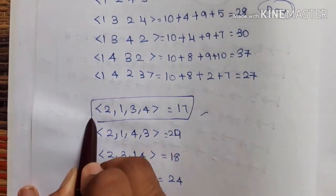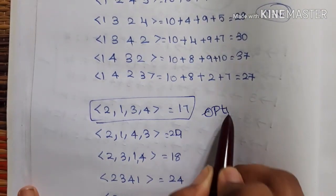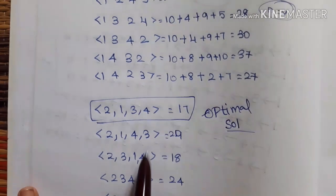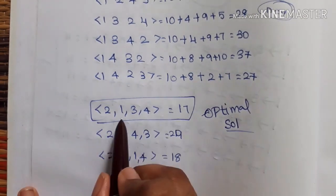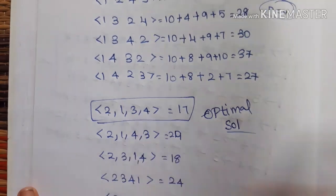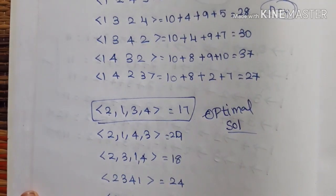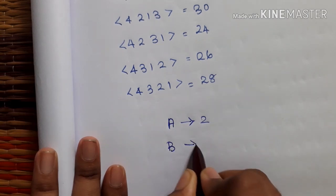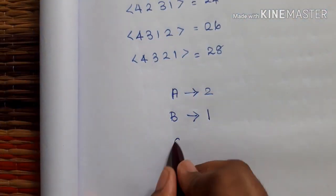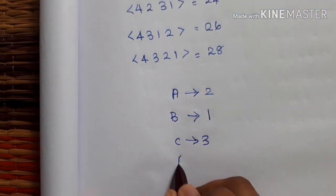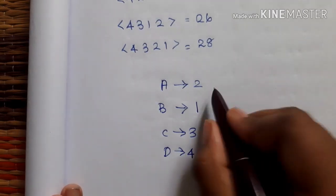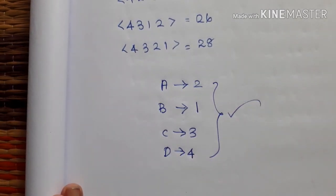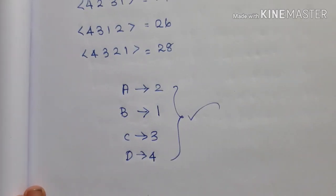What we need to do is: this is the optimal solution. Now we assign it: 2, 1, 3, 4. That means 1st person's second job, 2nd person's first job, 3rd person's third job, 4th person's fourth job. Thank you.